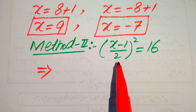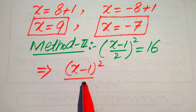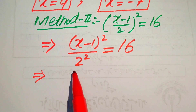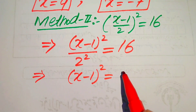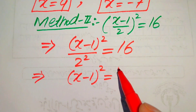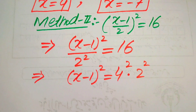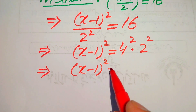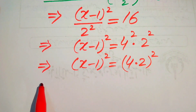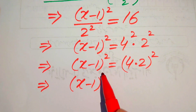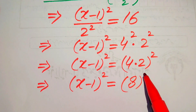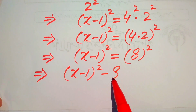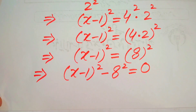For the second method, we copy down the given equation: (x minus 1 over 2) whole squared equals 16. We break the square by applying it to the numerator and denominator separately, giving (x minus 1) whole squared divided by 2 squared equals 16. We then move 2 squared to the right-hand side, giving (x minus 1) whole squared equals 16 times 4, which equals 64. We then write (x minus 1) whole squared minus 8 squared equals 0.